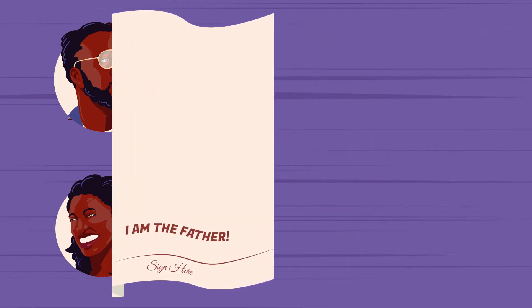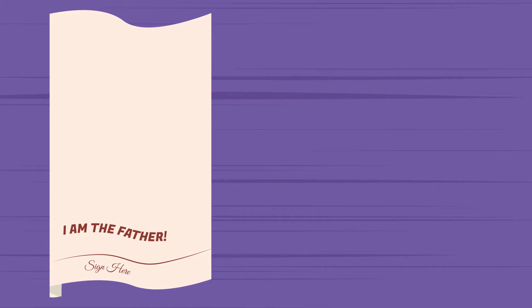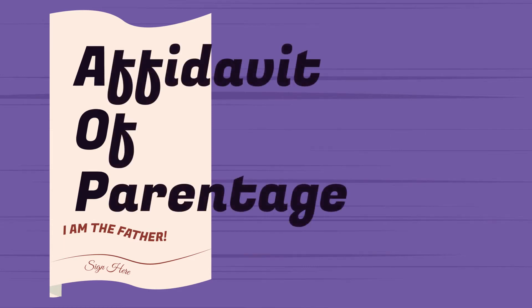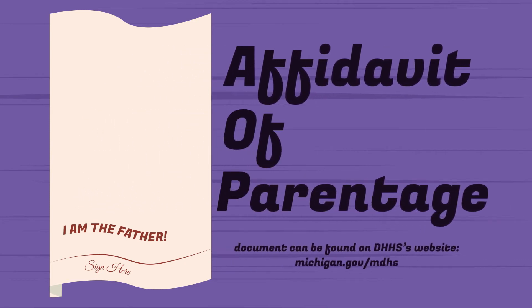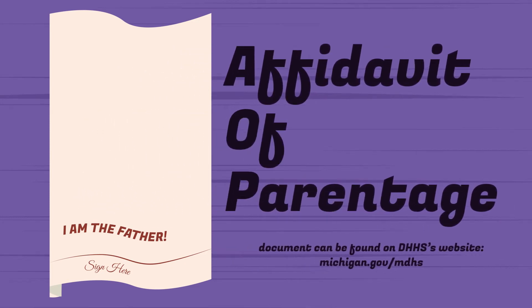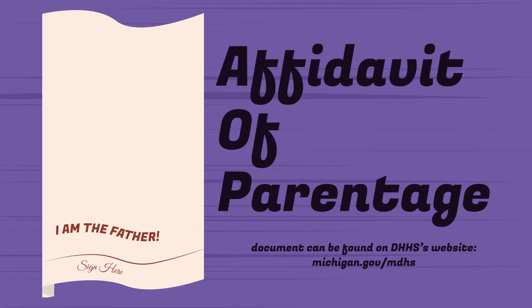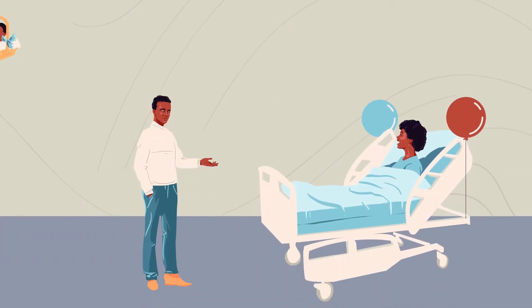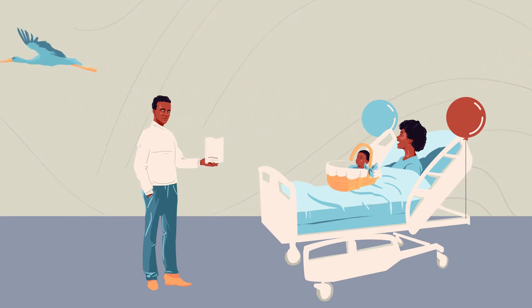Paternity is primarily established in three ways. The first is the Affidavit of Parentage, or AOP — a document that the father of a child born outside of a marriage can sign to create a legal presumption that they are the legal and biological father. The document can be found on the Michigan Department of Health and Human Services website. This is usually given in the hospital after the baby is born. The mom and the presumed father sign it, but it can be signed later as well.